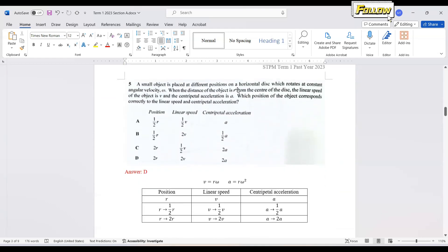We move on to question number 5. A small object is placed at different positions on the horizontal disk, which rotates at constant angular velocity. When the distance of the object is R from the center of the disk, the linear speed is V, centripetal acceleration is A. Which position of the object corresponds correctly to the linear speed and centripetal acceleration?